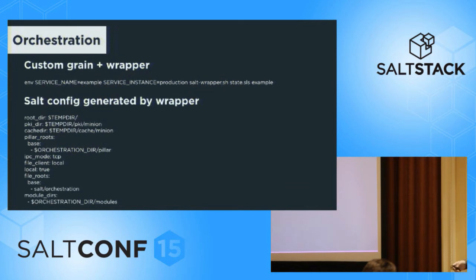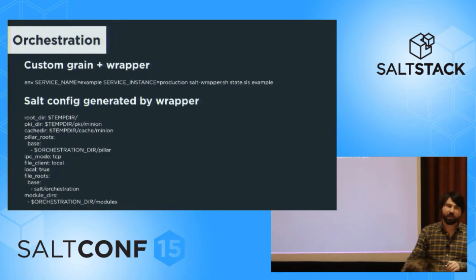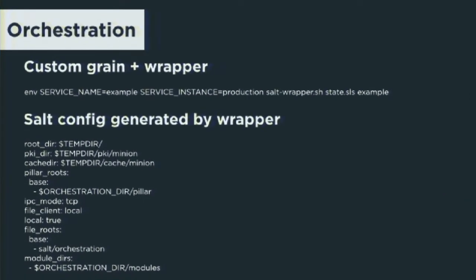Here's how we actually call the orchestration. As mentioned, we pass environment variables into Salt. We actually use a wrapper. Since we're running this on a Jenkins server, we don't want to run it as root. We need to be able to call this for multiple services at the same time. Unless you use concurrent or queued, Salt doesn't really handle running multiple versions of salt-call at the same time. We also want to be able to limit the scope of what this thing is doing for a particular service. So we generate a configuration, put it in a temp directory, and then run the wrapper that calls Salt with state.sls against the specific SLS module inside of the repo's orchestration directory.